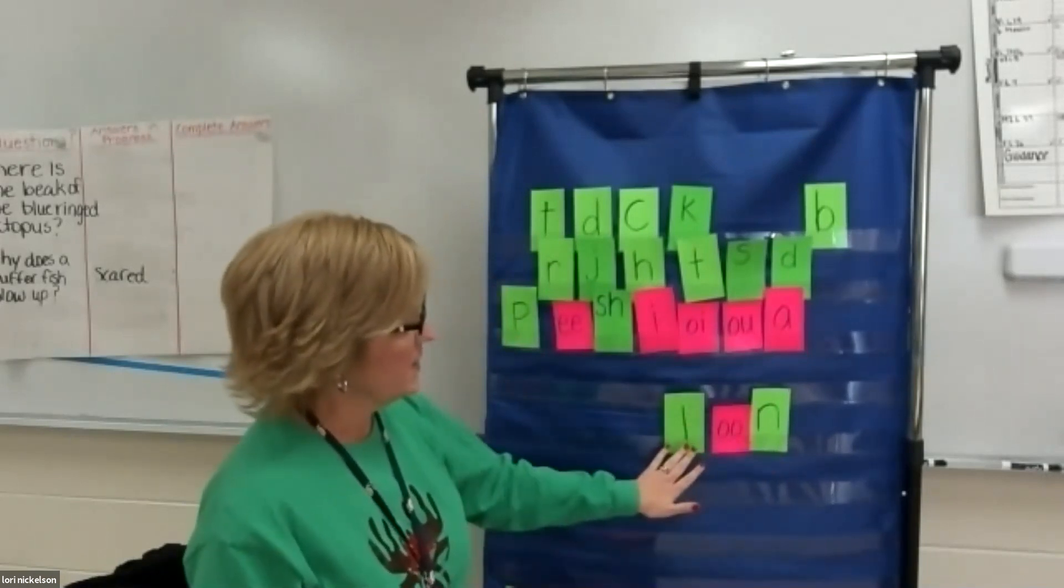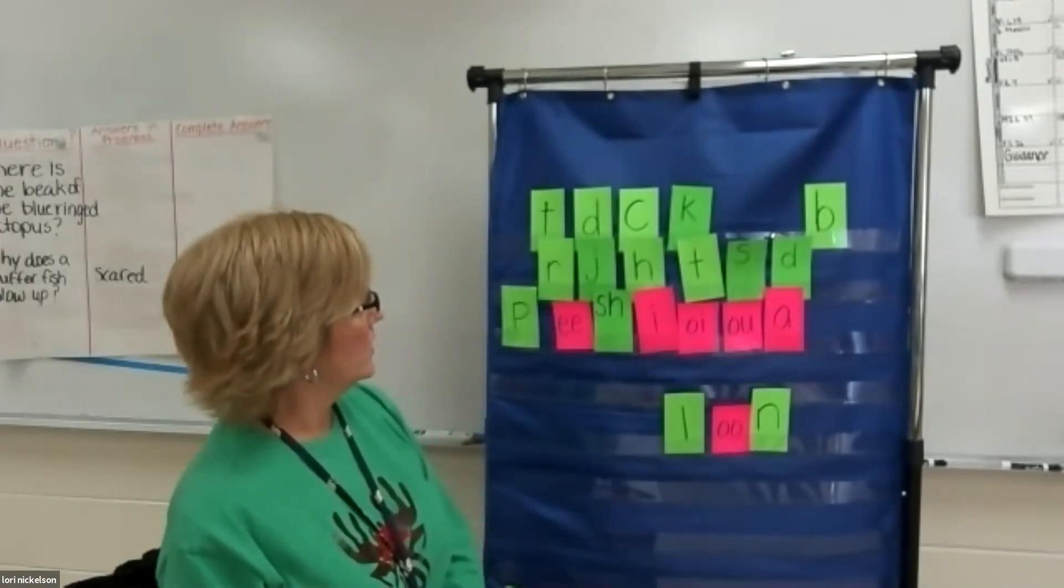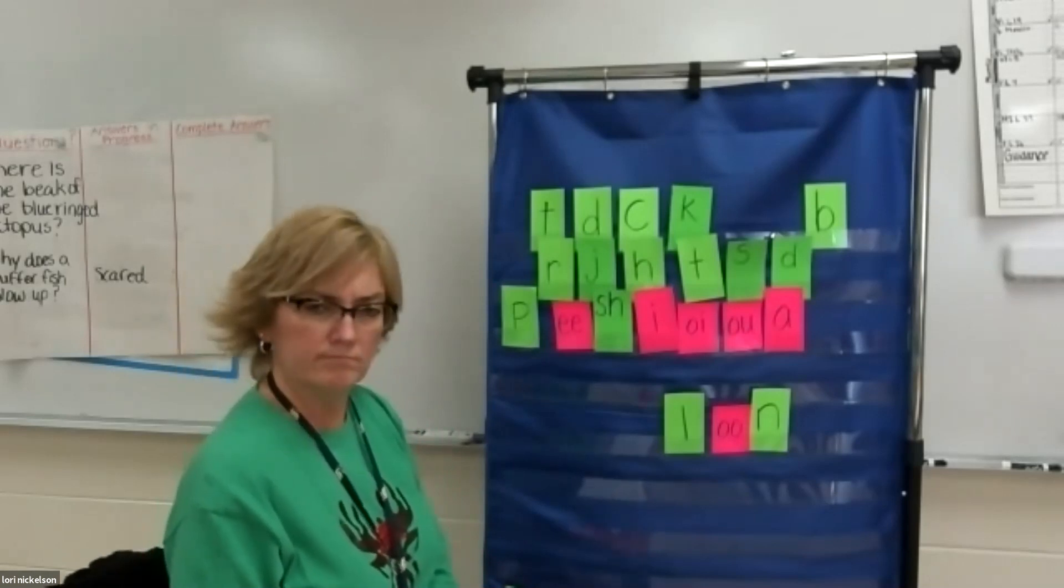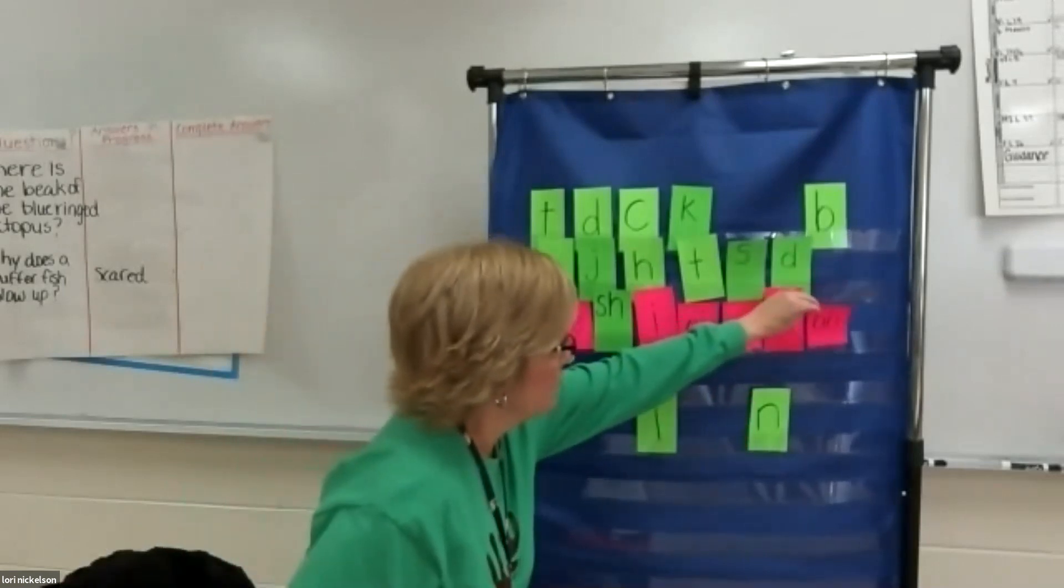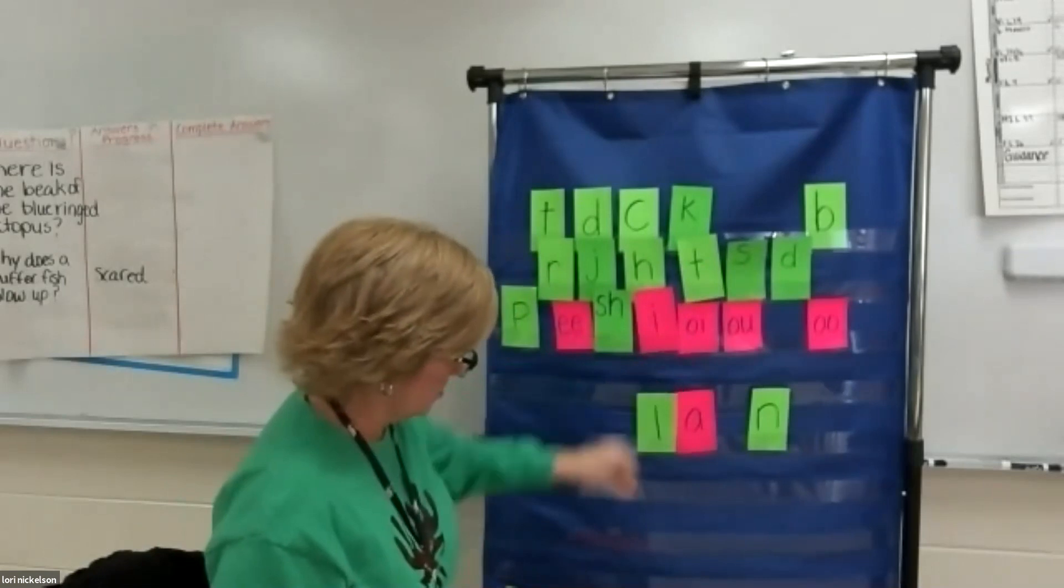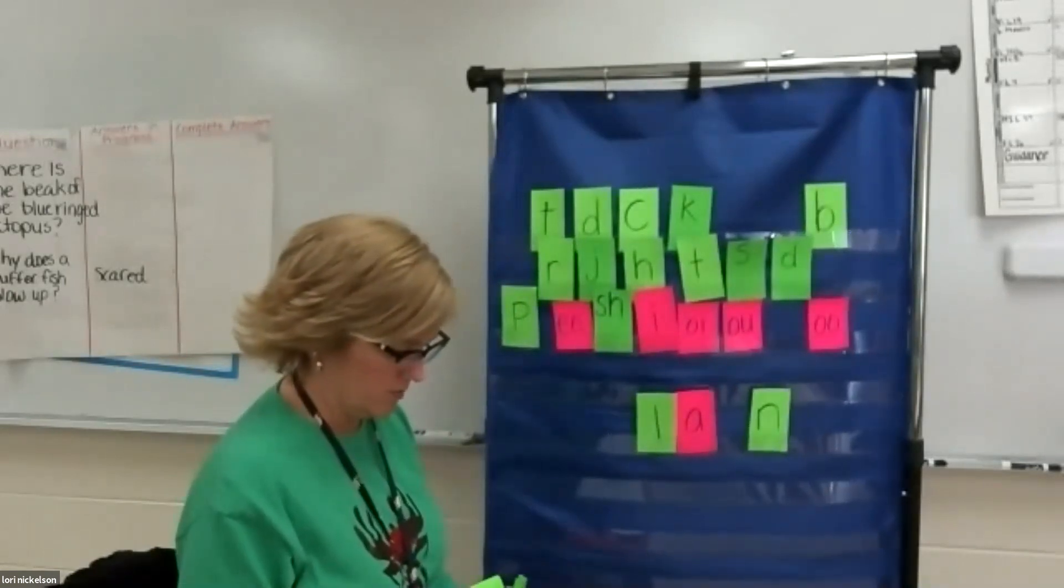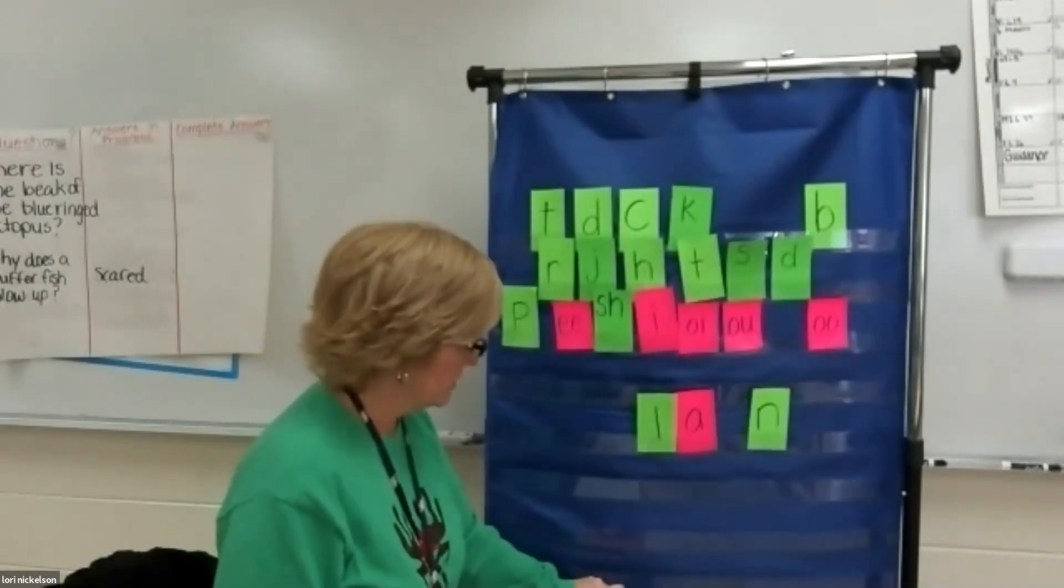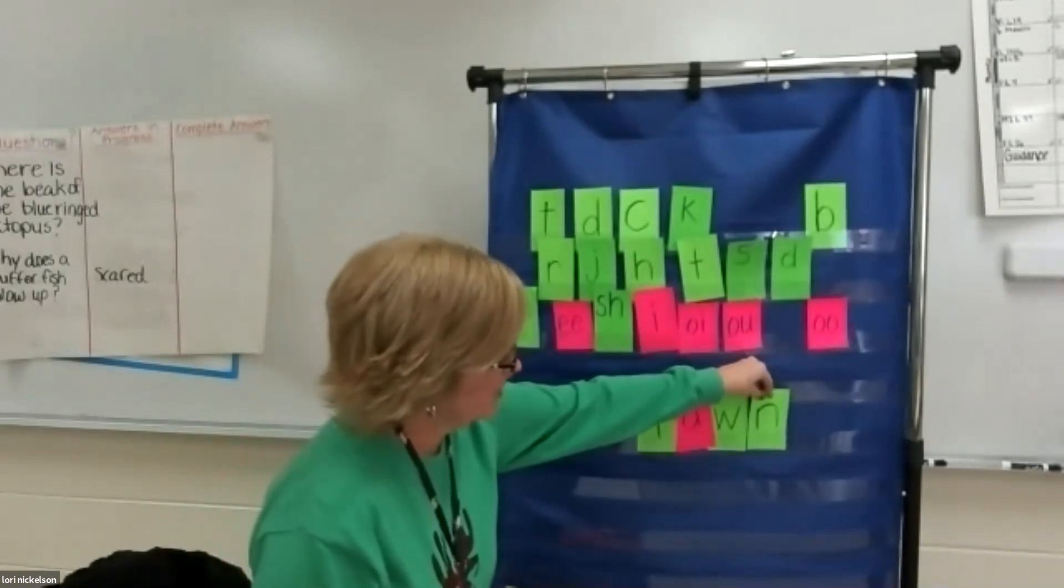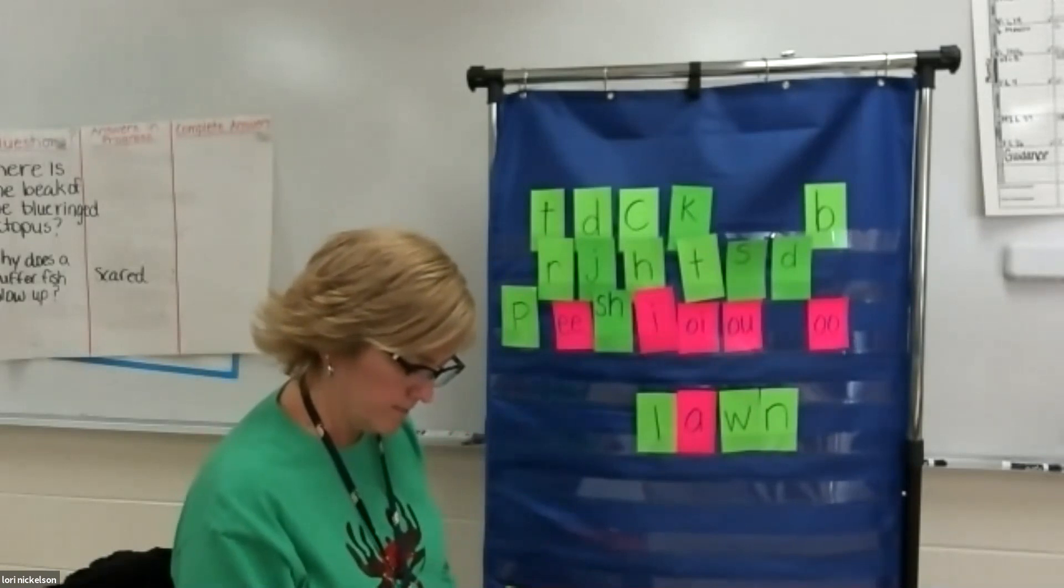So now let's make a new word. Let's make loon into lawn. Lawn. How would I do that? I would replace the O. I would put an A down here, but I also need a W. Let me dig this out, our W, because they did not call for it. So I did not get it out this time. But apparently we need it. So lawn is spelled L-A-W-N. Good.